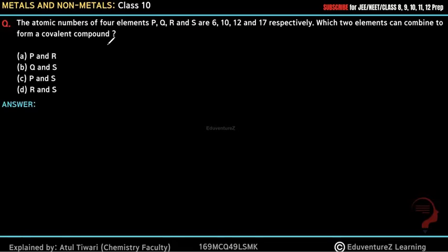Hello everyone, our question is: the atomic numbers of four elements P, Q, R, and S are 6, 10, 12, and 17 respectively. Which two elements can combine to form a covalent compound?